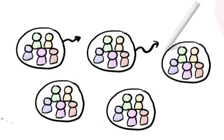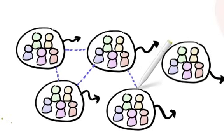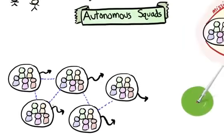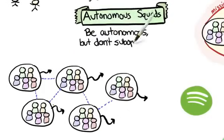Although each squad has its own mission, they need to be aligned with product strategy, company priorities, and other squads. Basically be a good citizen in the Spotify ecosystem. Spotify's overall mission is more important than any individual squad. So the key principle is really be autonomous but don't sub-optimize.